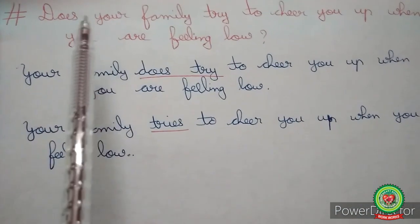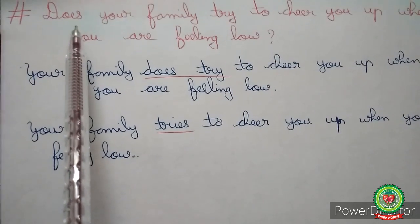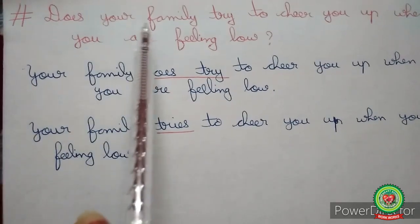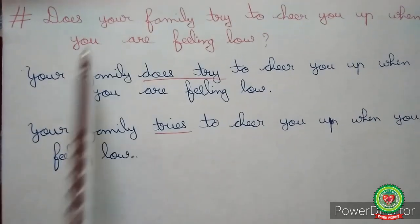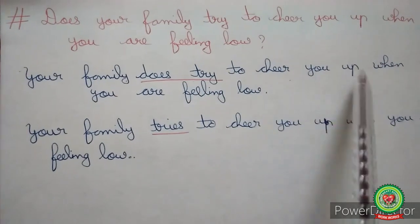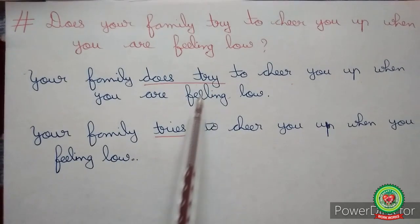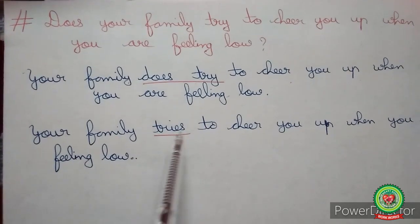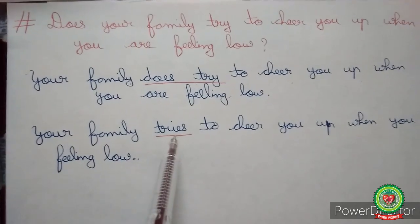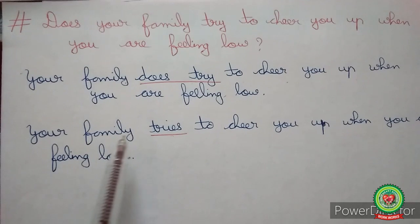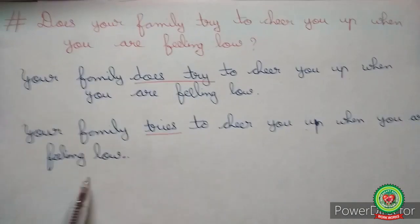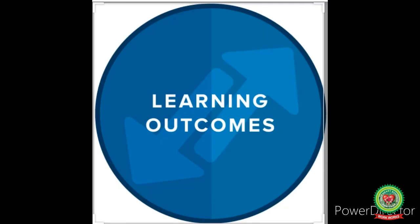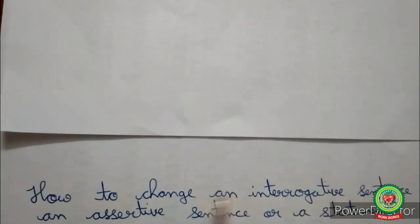'Does your family try to cheer you up when you are feeling low?' This sentence begins with 'does,' the helping verb. We place 'does' after the subject 'your family,' giving 'your family does try to cheer you up when you are feeling low.' Now 'does try' is changed to 'tries,' adding 's' or 'es' to the present form of the verb and removing 'does.' The statement becomes: 'Your family tries to cheer you up when you are feeling low.'